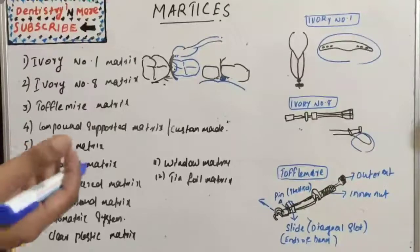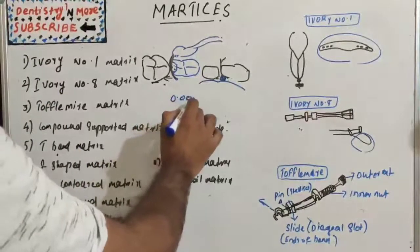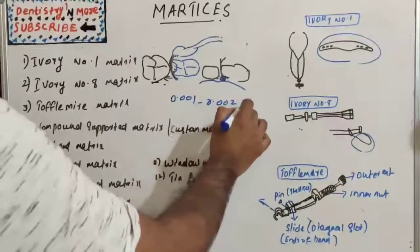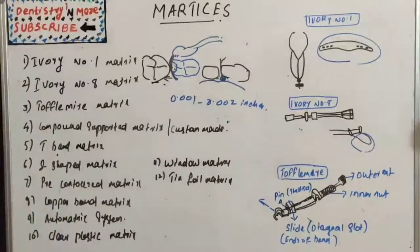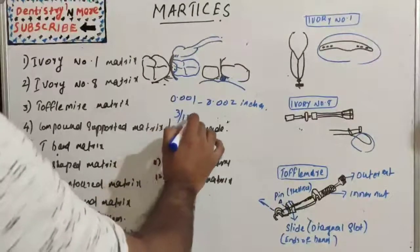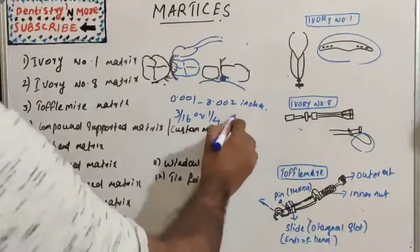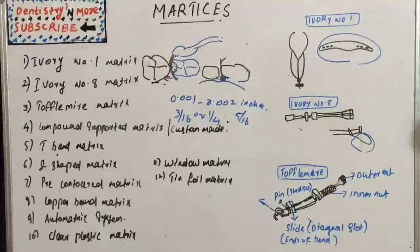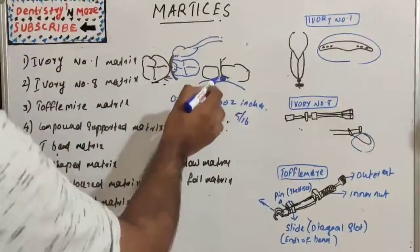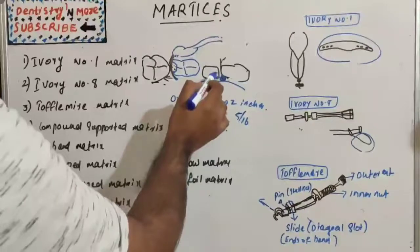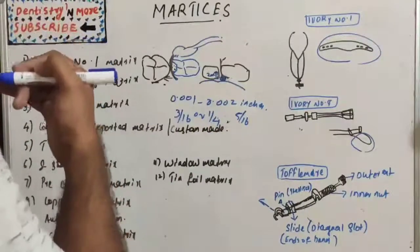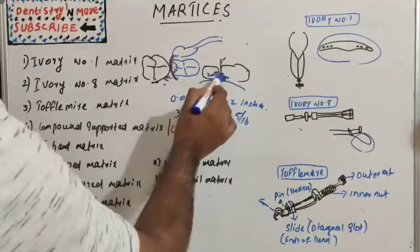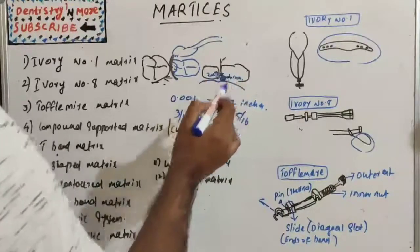The bands are usually available as strips of various dimensions: thickness 0.001 to 0.002 inches, and width 3/16 or 1/4 inches for permanent teeth and 5/16 inch for deciduous teeth. The matrix band should extend 2 mm above the marginal ridge and 1 mm below the gingival margin of the preparation.